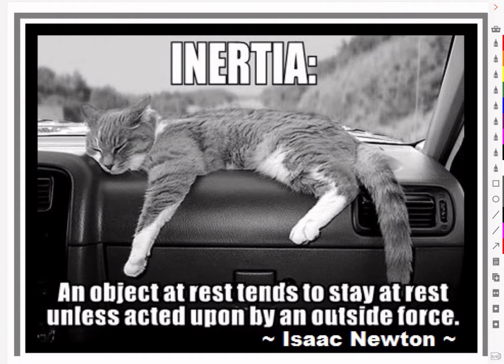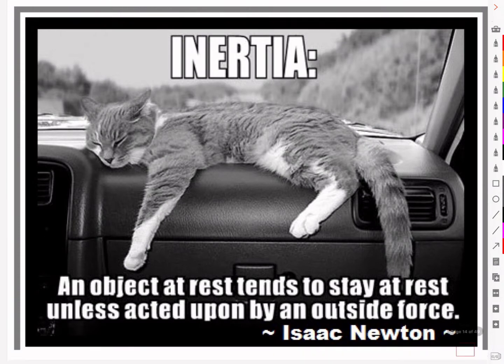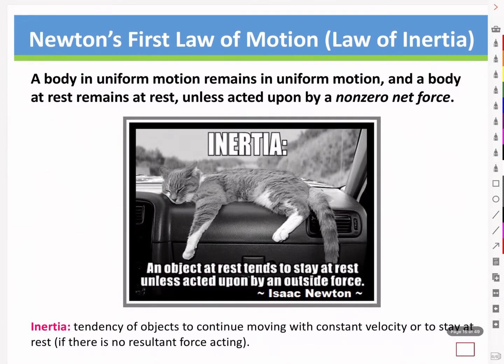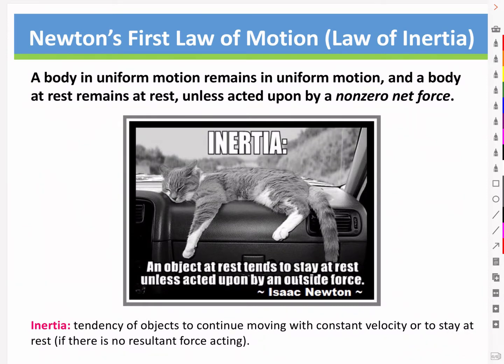Well, in fact, there isn't a force that pulls the cat toward us, but rather the absence of a force to keep the cat moving along with the car as it accelerates forward. A cat at rest likes to stay at rest, but the dashboard disappears from under it. And that is the essence of Newton's first law of motion, also known as the law of inertia: a body in uniform motion remains in uniform motion, and a body at rest remains at rest, unless acted upon by a non-zero net force.